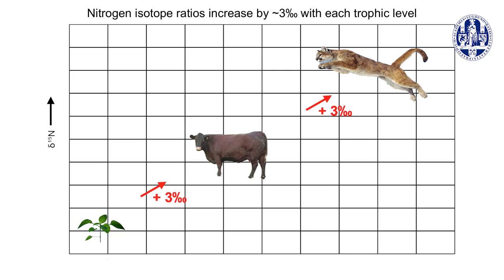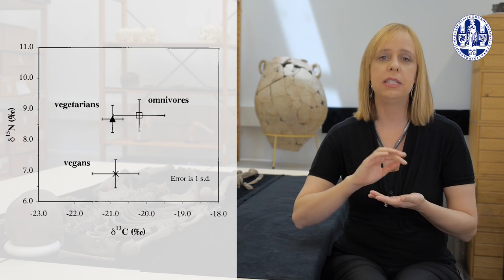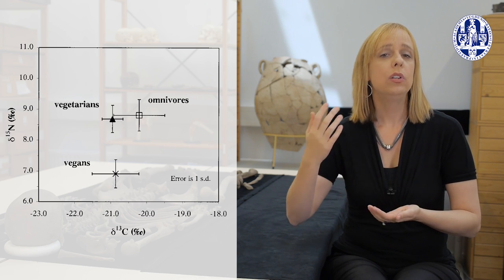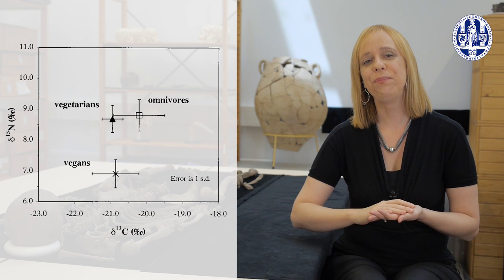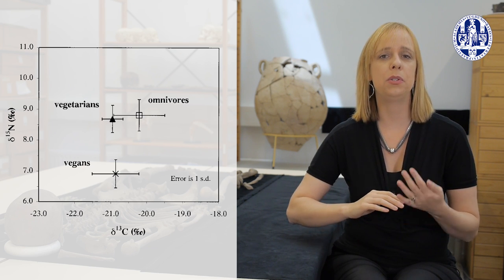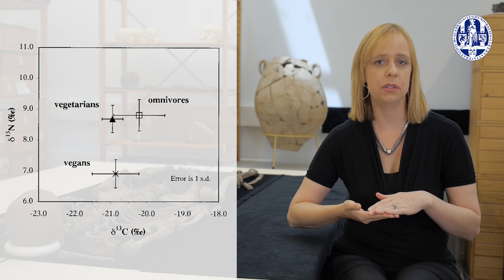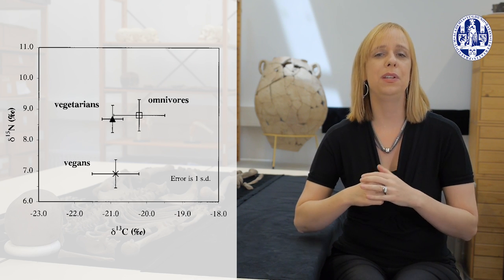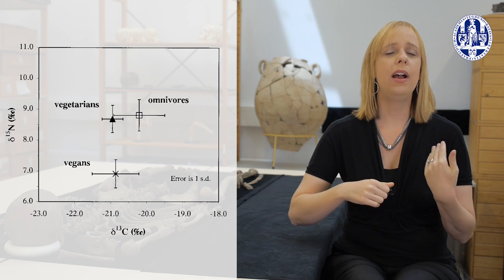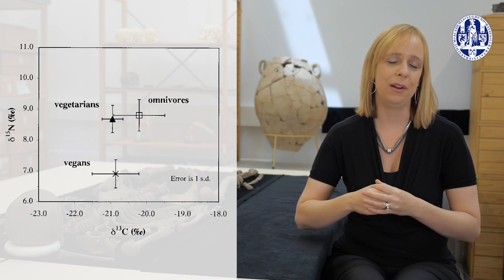Between each trophic level, we see a jump of about 3 per mil in the ratio of nitrogen-15 to nitrogen-14. So, as O'Connell and Hedges demonstrate, this is why, for example, in humans, a vegan, someone who doesn't eat any animal products, will have a lower stable nitrogen isotope ratio than someone who does eat meat. As most humans are omnivores, we typically fall between herbivores and carnivores. The proportion of meat to plant food can be inferred from someone's stable nitrogen isotope values, when the values of the foods they might have been consuming are characterized.